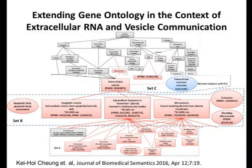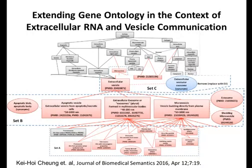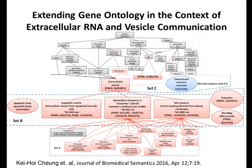Looking at the center part of the nomenclature, you can see terms such as apoptotic blebs, apoptotic vesicles, or apoptotic bodies; exosome or exosomes — often used in the plural since we study a cloud of exosomes, not a single exosome; microvesicles, which are considered to bud directly from the plasma membrane; and other terms such as ectosomes.